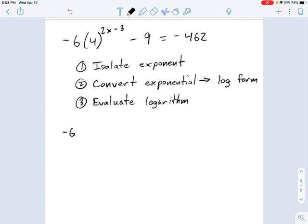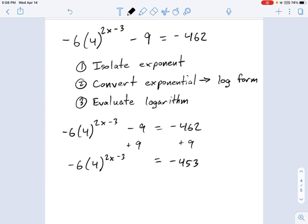Let's just write this again here. Negative 6 times 4 to the 2x minus 3 minus 9 equals negative 462. And the first step in isolating this is adding 9 to each side. I'm going to get closer to having the 4 by itself. So that produces negative 6 times 4 to the 2x minus 3, and the minus 9 plus 9 cancel out. On this side over here we have negative 453.